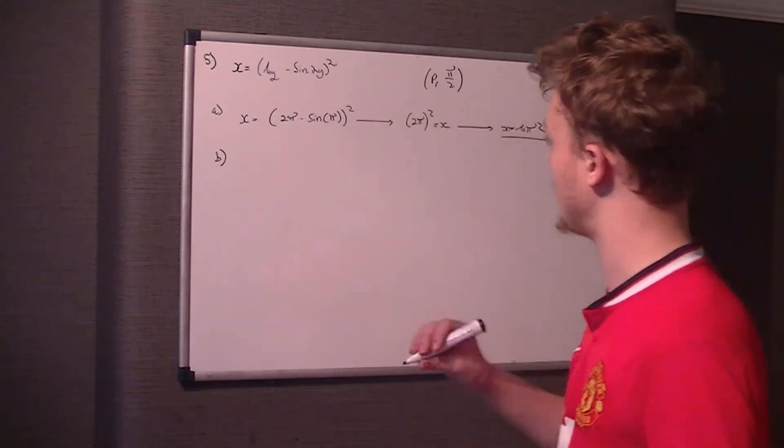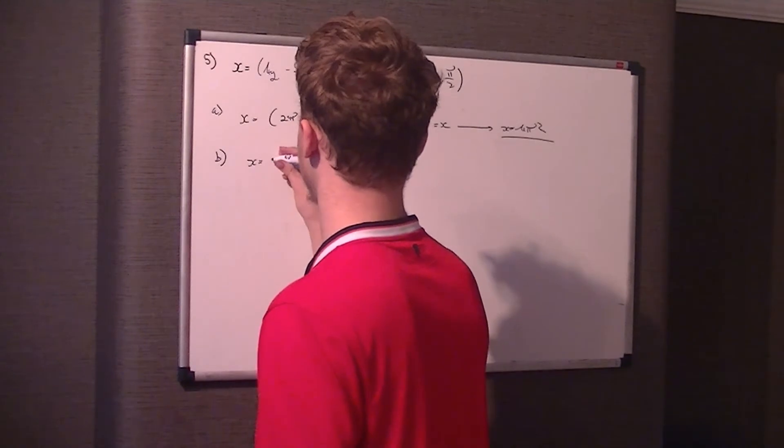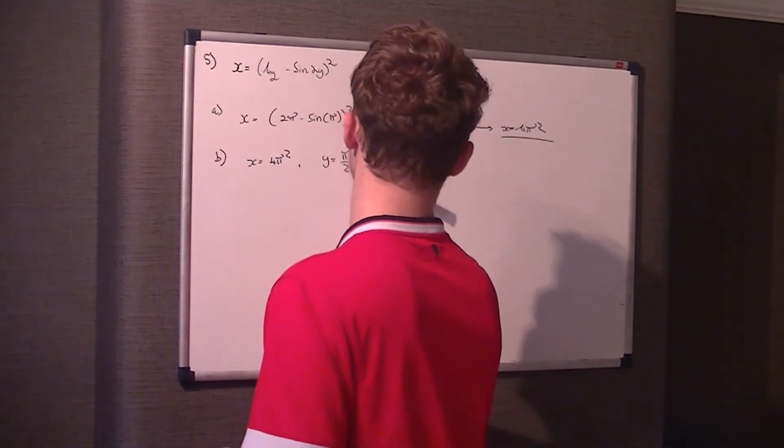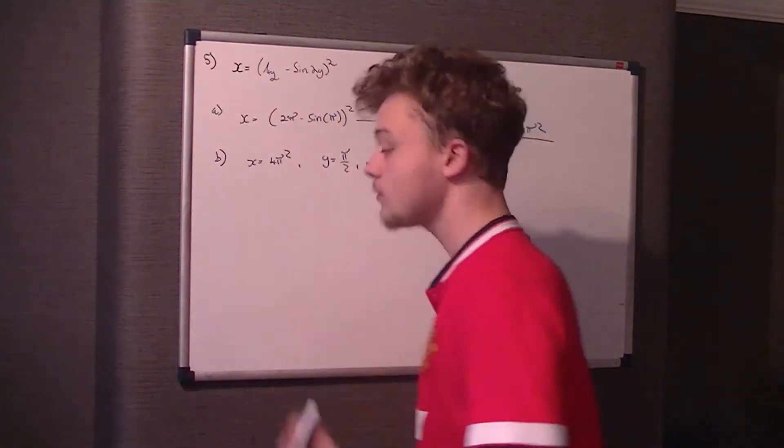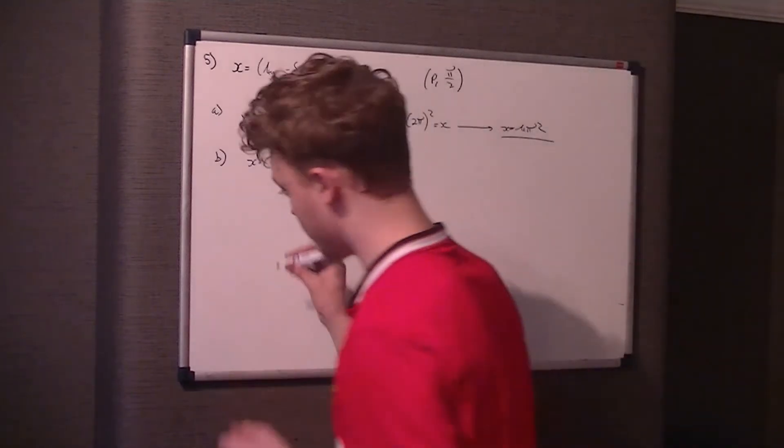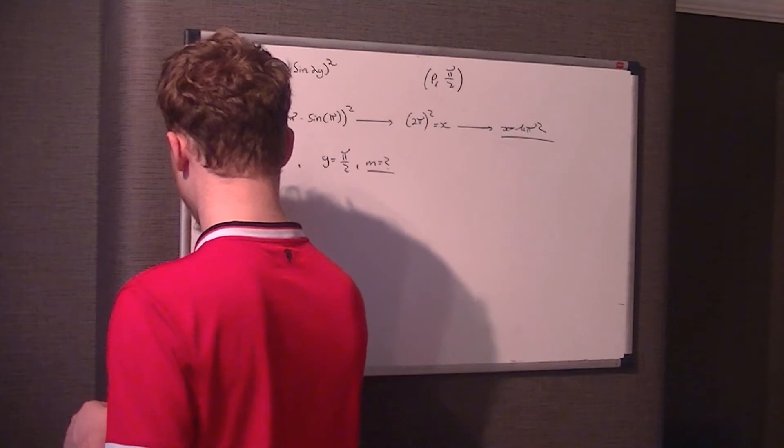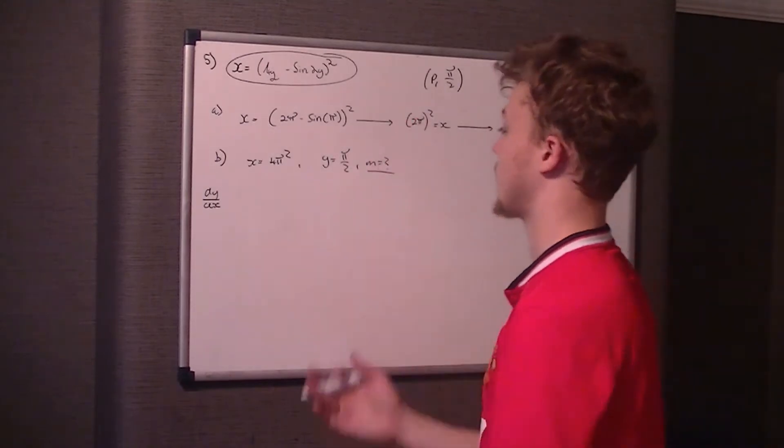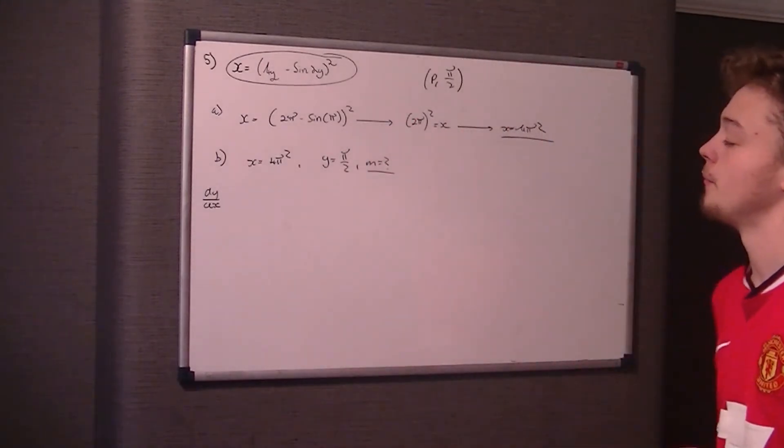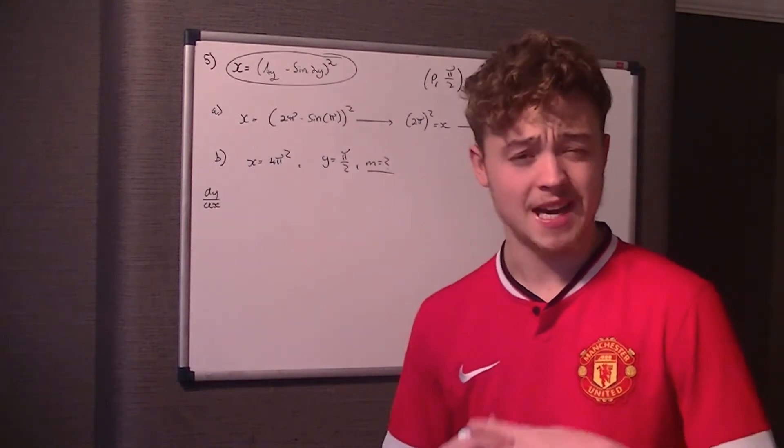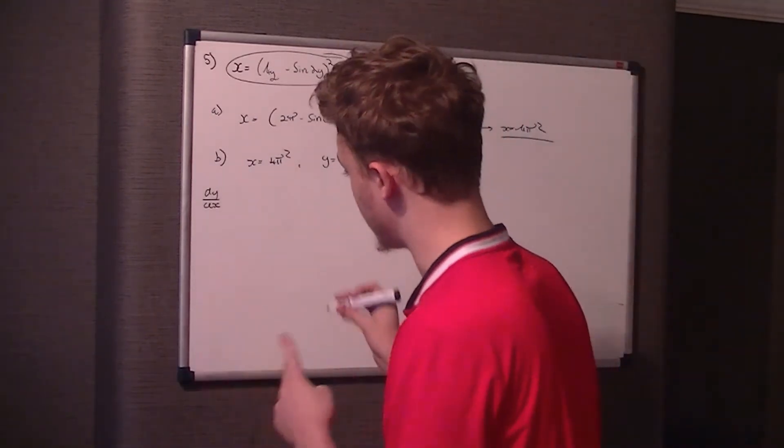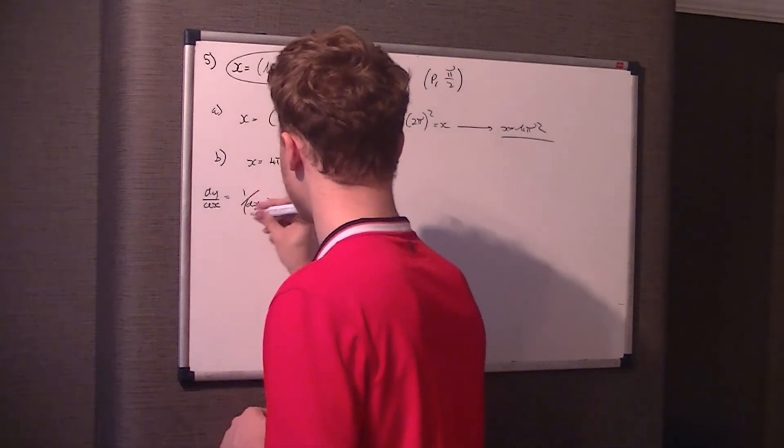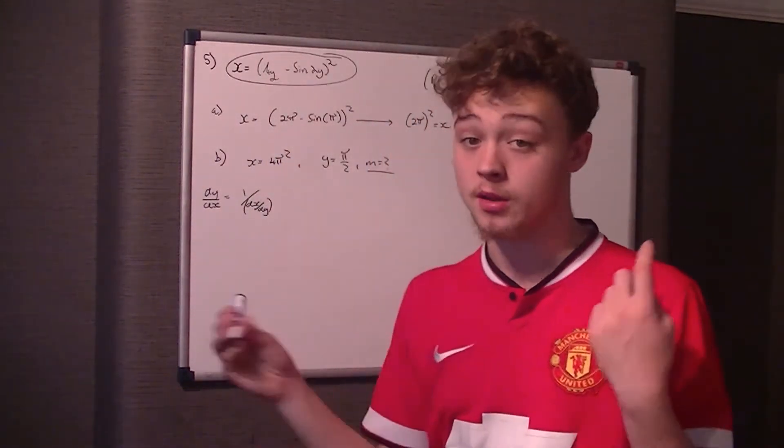So for that, we need to calculate what we've got. So we've got x, which is 4pi squared. We've got y, which is pi on 2, but we don't have the gradient. I'm going to call the gradient M. So normally, what we do is we'd do dy dx. However, we haven't got an equation for y. And if you were to try and rearrange that one to get y, the likelihood is you would expand it, and it would be very hard to. You'd likely make a mistake.